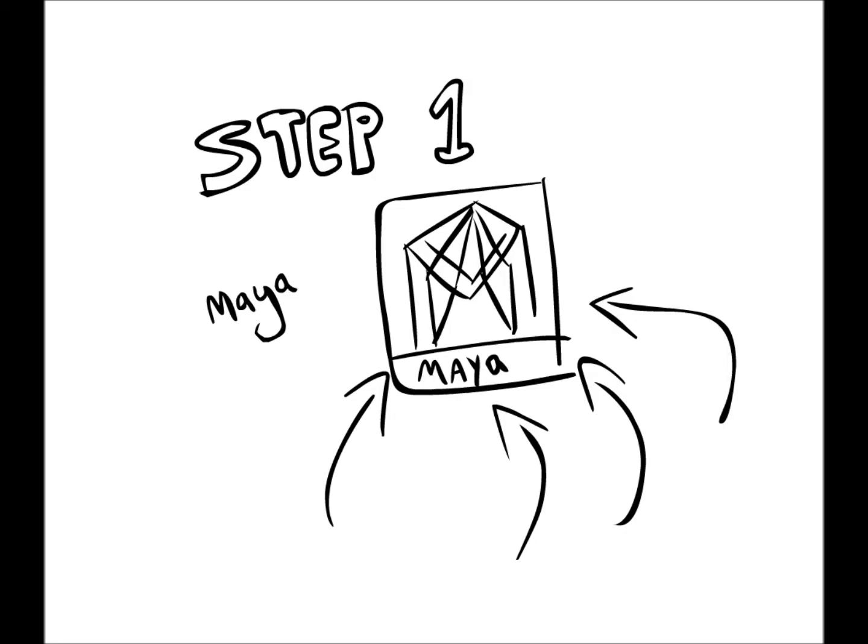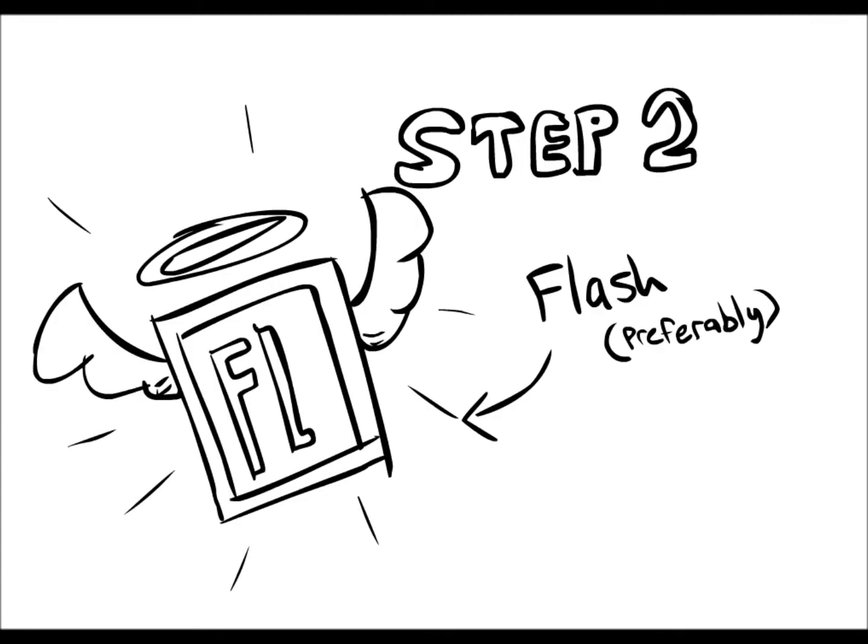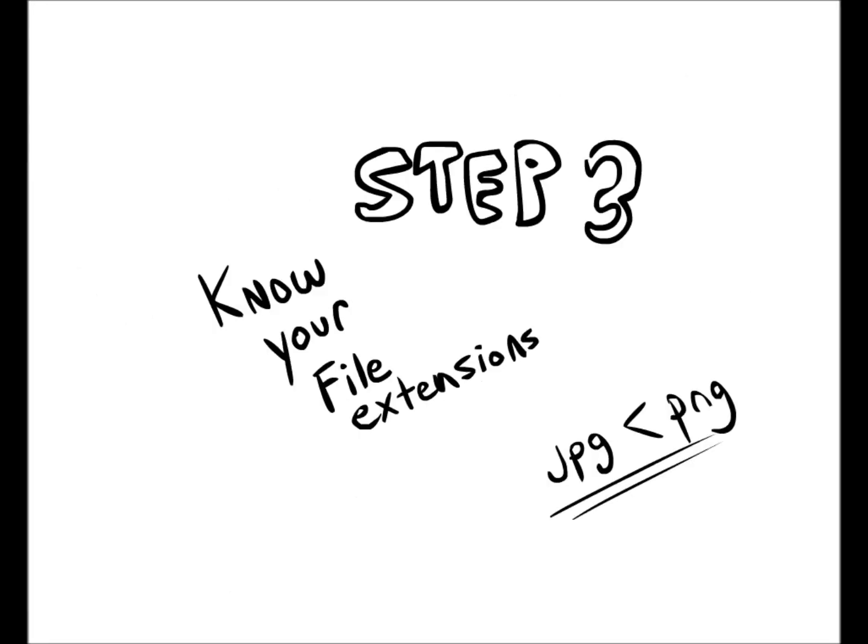Before we begin, here are some things that you will need. Step 1: Autodesk Maya. I used 2016, but you can use whatever version you're comfortable with. You'll also need to possess the basic knowledge of how textures and UVs are applied to objects. Step 2: Adobe Flash or any kind of image software that has a timeline. Feel free to use any version you're more experienced using — I'm using a portable version of CS3. Step 3: Know your image extensions. Both JPEG and PNG are able to have sequences, but Maya is much better off using a PNG sequence.